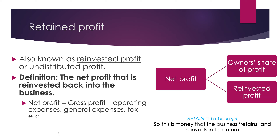Just a refresher on what net profit is: it is your gross profit — the money you make from sales minus your cost of goods sold — and then you take away your operating expenses, general expenses, tax, and so on. When you take away all of those from your gross profit, you get the net profit. You can either take some as the owner, distribute it to shareholders of the business, or reinvest it back into the business to use for opportunities of growth and expansion.